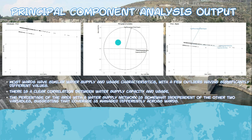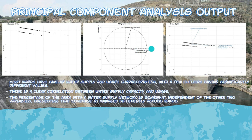Here's the PCA graph of variables. This graph shows the loadings of the original variables on the two principal components. The arrows represent the direction and magnitude of each variable's contribution. Water usage (liters/day) and capacity (liters/day) are strongly aligned with Dimension 2, indicating they contribute significantly to variability in that dimension. The percentage area with water supply is more aligned with Dimension 1. The angles between arrows indicate correlations — water usage and capacity are almost parallel, showing they are highly correlated.